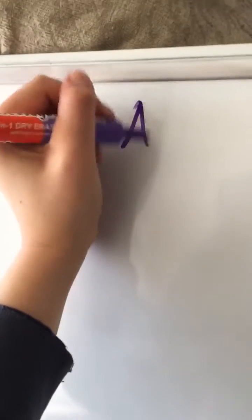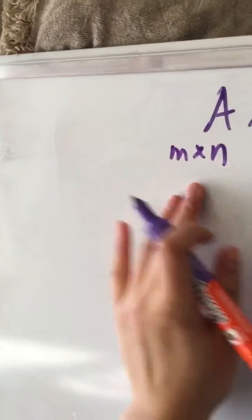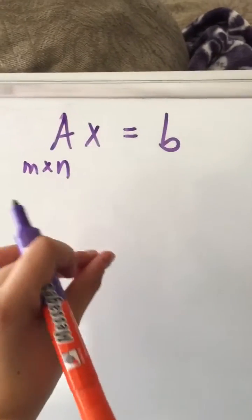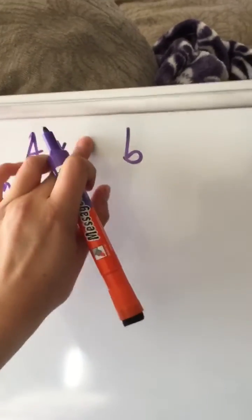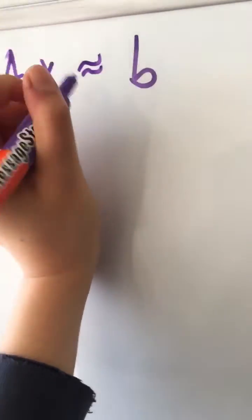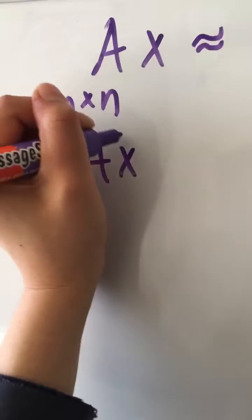So now back to AX equals B where A is any m by n matrix, meaning it can be square or rectangular, and since it's an approximation, we can denote it this way or we can take X to be X hat.